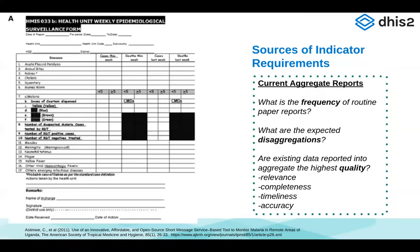In each of these methods, you'll probably use a mixture of different sources for your requirements gathering. The first might be the current aggregate reports or the current case reporting form — what is the current frequency of routine paper reports? Maybe this is a weekly epidemiological surveillance form. What are the expected disaggregations? For example, cases broken down under and over five years of age for malaria. And are there existing data reported into aggregate at high quality currently — how much can we expect these data are being reported on a timely basis and are they actually relevant for the care program?